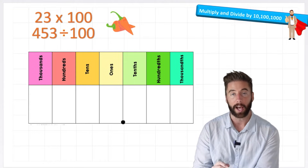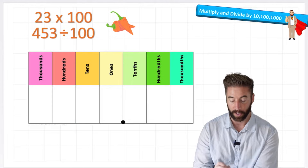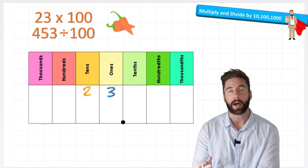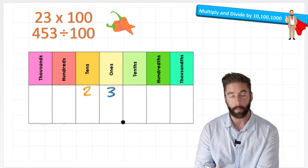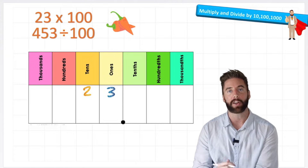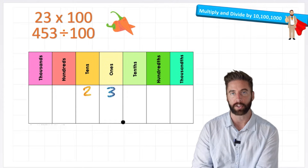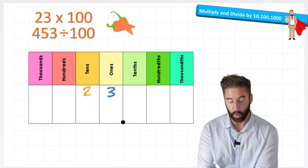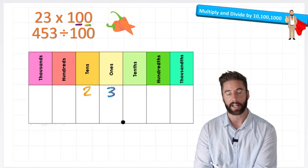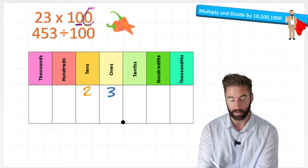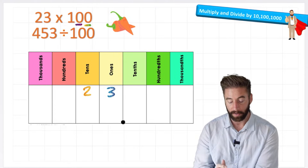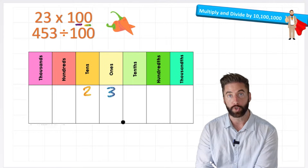Let's get an orange chilli challenge! I'm looking at 23 times 100 and I'm going to put my 23 in place just like before, but this time I'm multiplying by 100, and when I do that I now need to make our number 100 times larger than what it is. So to do that, I'm going to move it not just one place up our place value chart but two places, and I can see that because I have one, two zeros in my 100. So to make it 100 times larger, let's move them one, two places.